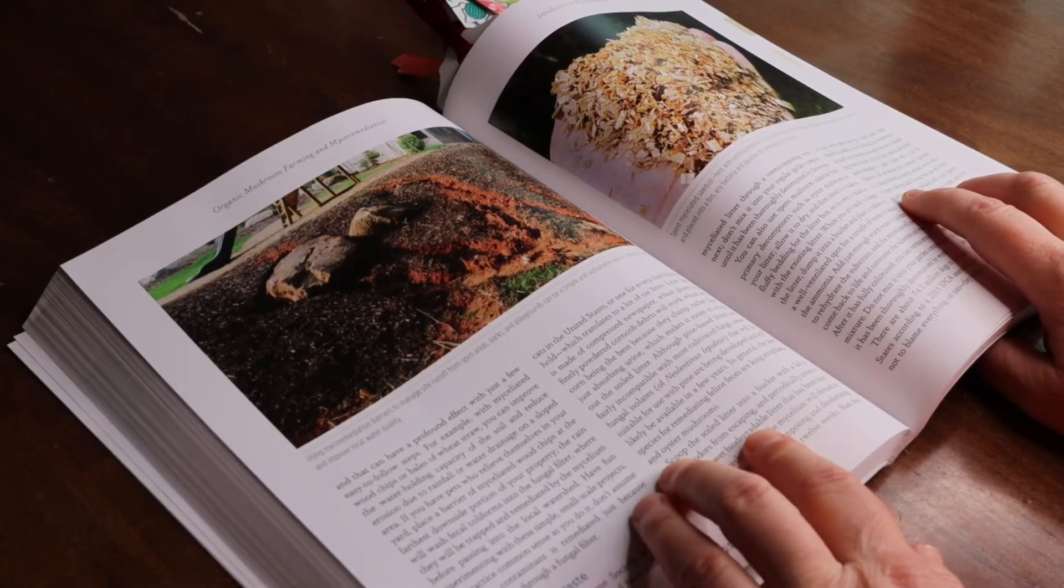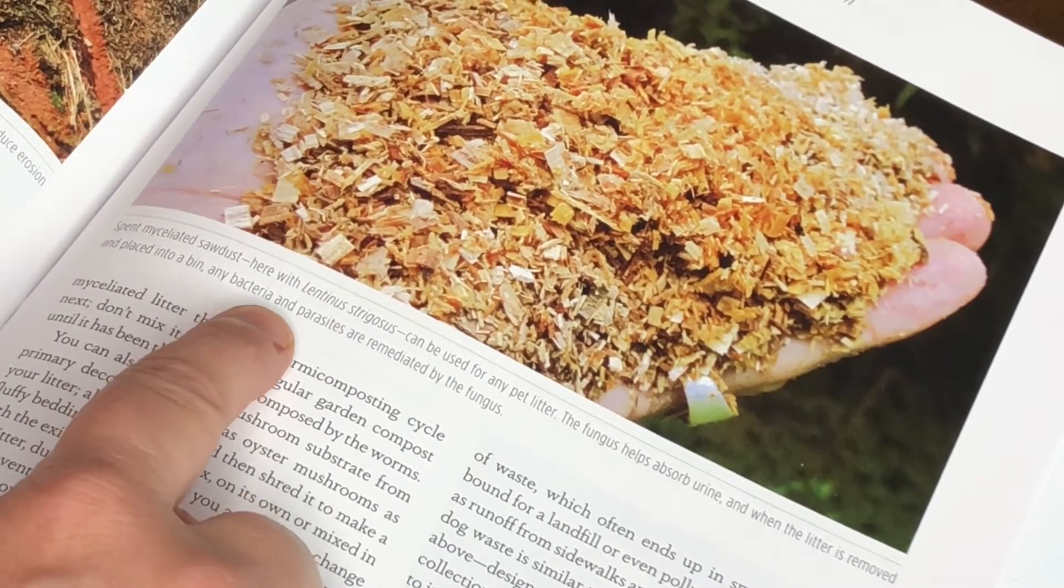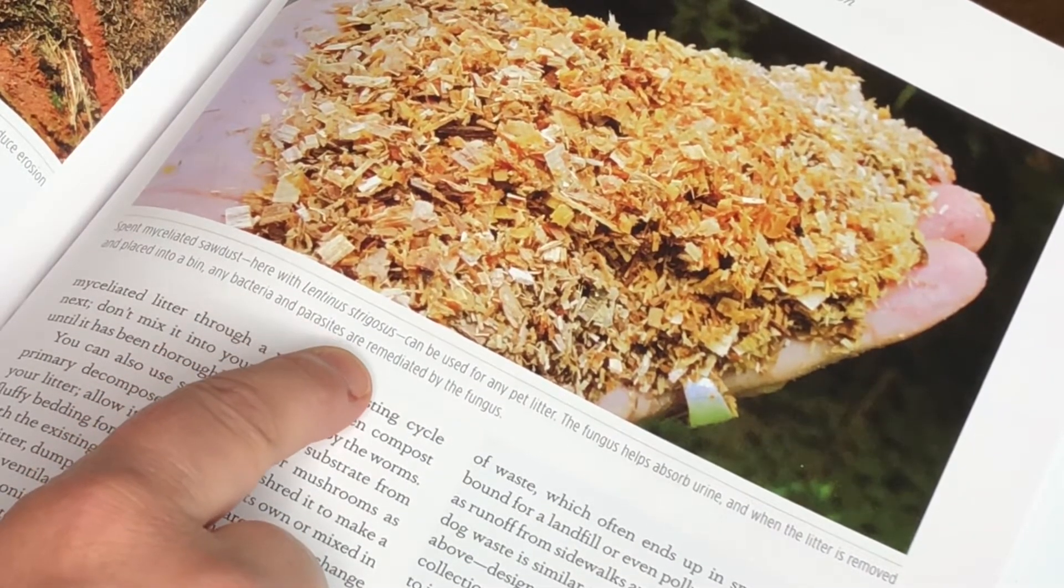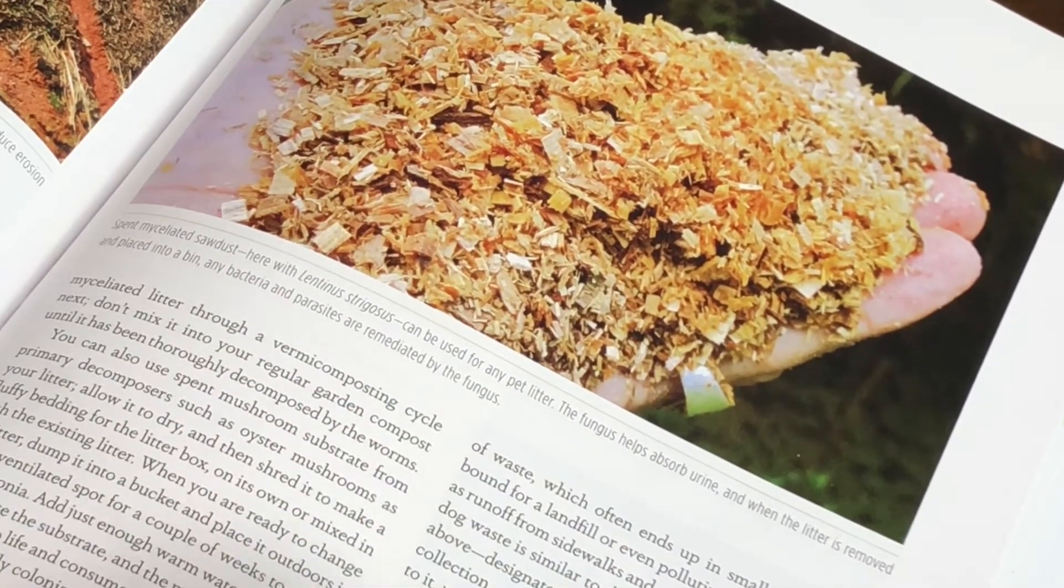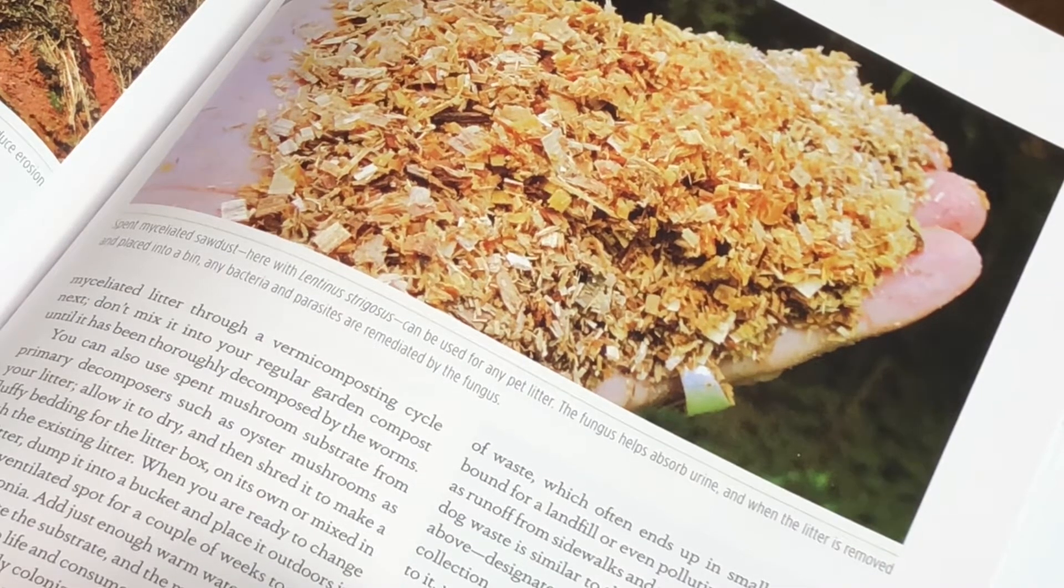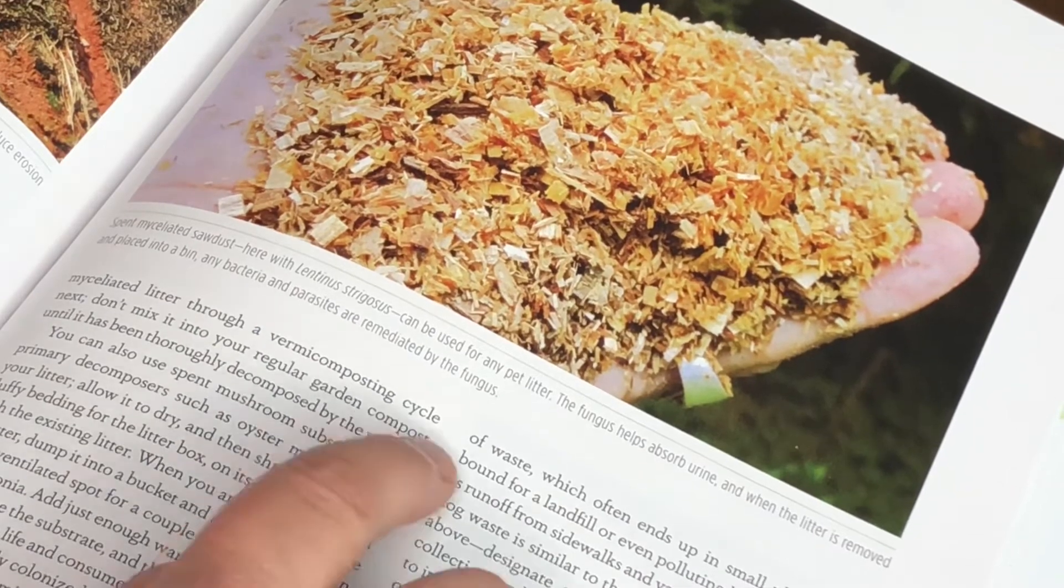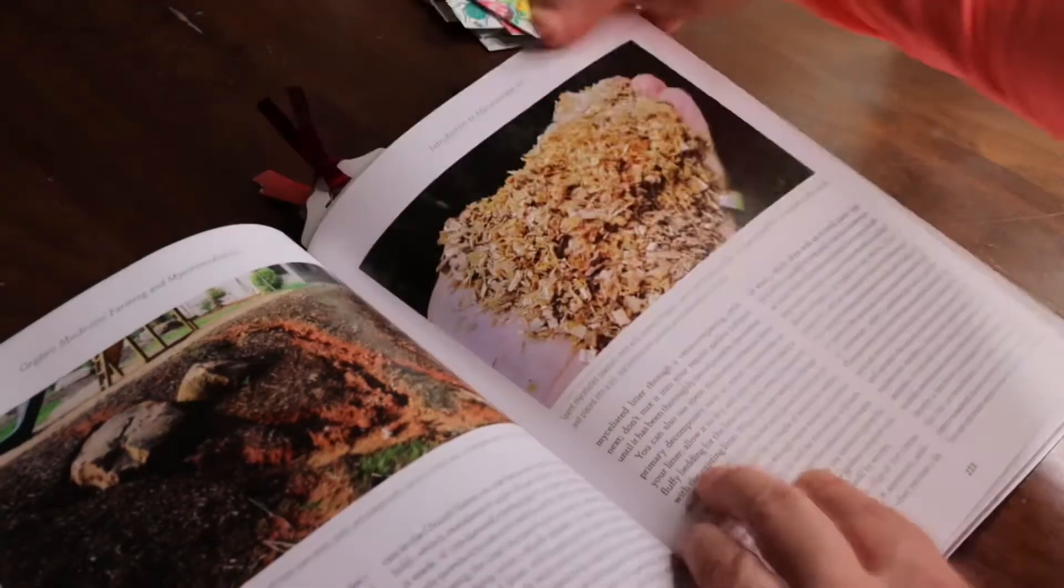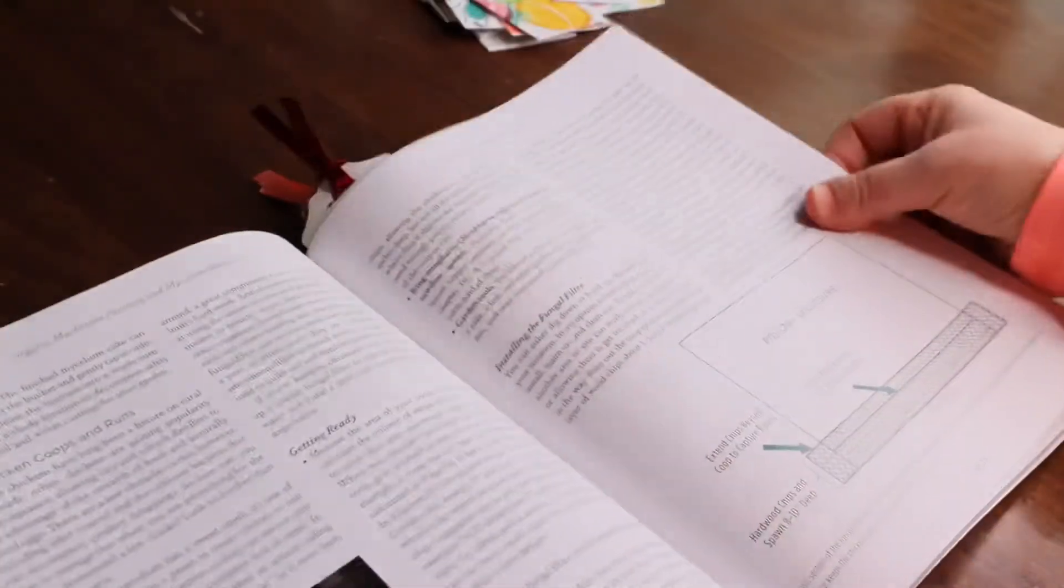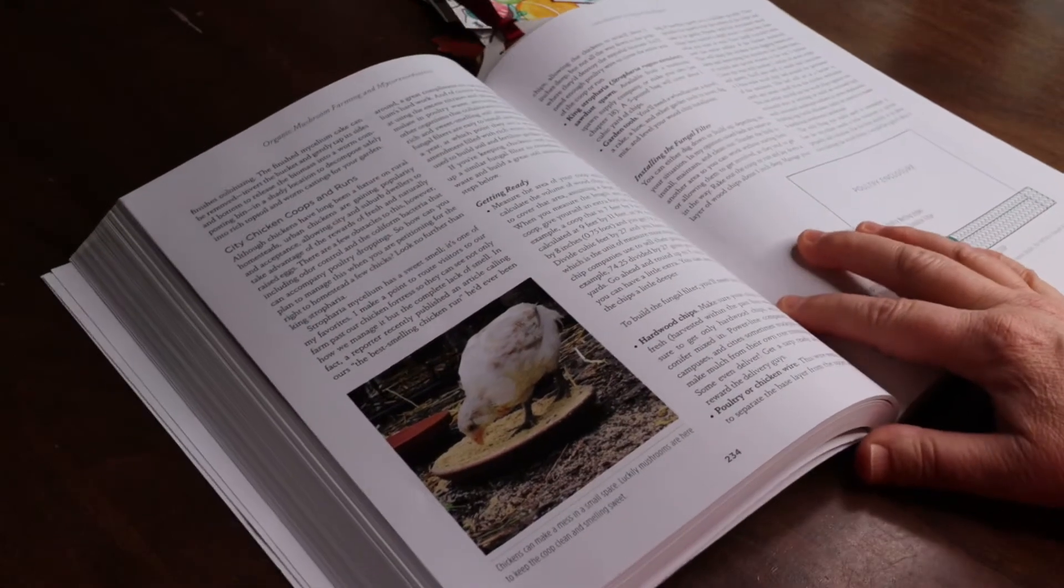This section was very cool to learn about, how to deal with dog and cat waste. It says, spent myceliated sawdust here with Lentinula strigosus can be used for any pet litter. The fungus helps absorb urine, and when the litter is removed and placed into a bin, any bacteria and parasites are remediated by the fungus. Isn't that cool? And then how he uses mushrooms with the manure your chickens leave behind is just genius.